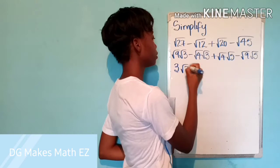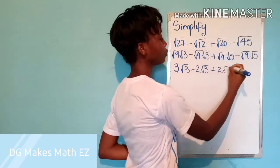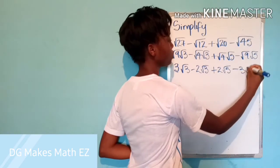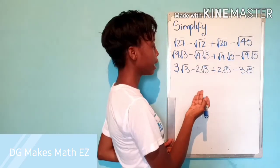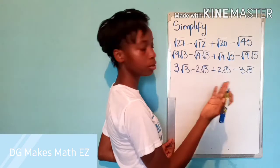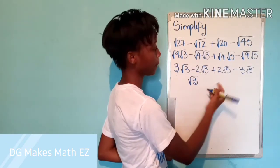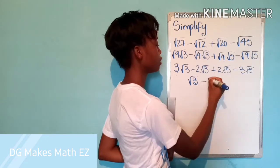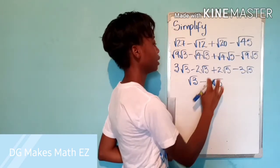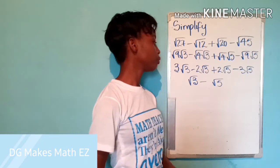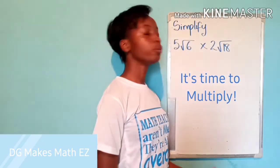So this gives us 3 root 3 minus 2 root 3 plus 2 root 5 minus 3 root 5. We already have our like surds beside each other, so we work on the coefficients. 3 minus 2 gives 1 root 3. 2 minus 3 gives negative 1 root 5. Our final answer is root 3 minus root 5.